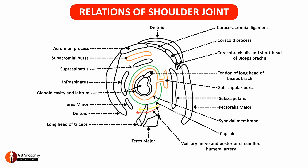Let us make the bursa dotted so that it can be easily recognized as a separate structure. Similarly, you can do the same for the synovial membrane as well. This allows the synovial membrane to be seen separately from all the other lines in the diagram. Let us now color this to complete our diagram.